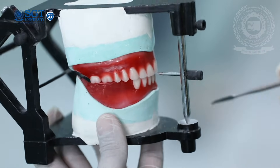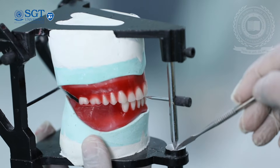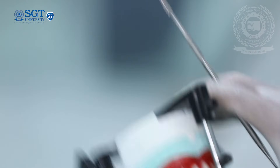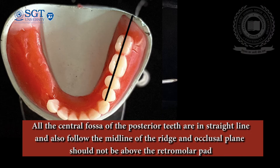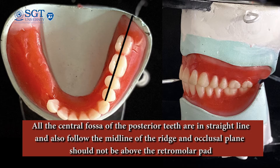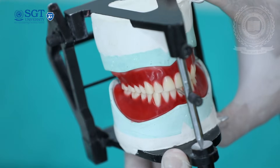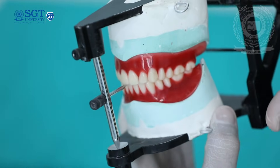There should be no gap between the opposite side mandibular rim and the maxillary posterior, and the incisal rod should be touching the incisal table. The central fossa of all mandibular teeth should be in a straight line over the crest of the ridge and should not lie above the two-third of the retromolar pad area. Similarly, arrange the mandibular posterior teeth on the contralateral side, keeping in mind the principles discussed before in the video.